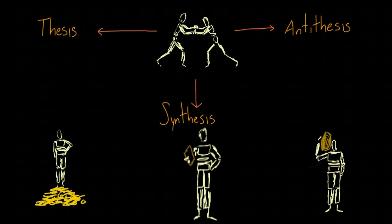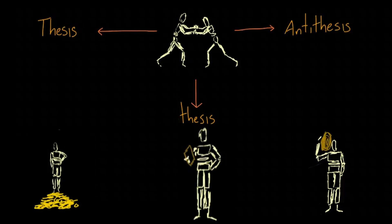This synthesis of thesis and antithesis would eventually become a new thesis in its own right, and begin the process of creating its opposite once again. Perhaps the new middle class has become so powerful that the factory owners begin to feel threatened.